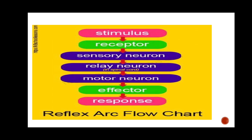You might have seen relay races — two people running, passing a stick from one person to another. There is an intermediate in that transfer. Similarly, relay neurons act as an intermediate, transferring the signal. The relay neuron passes the message to the motor neuron, and the motor neuron passes it to the effectors.